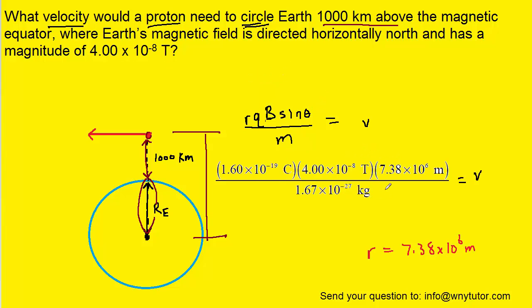And when we compute this on our calculators, we get a value approximately equal to 2.83 times 10 to the power of 7 meters per second as the final magnitude of the velocity.